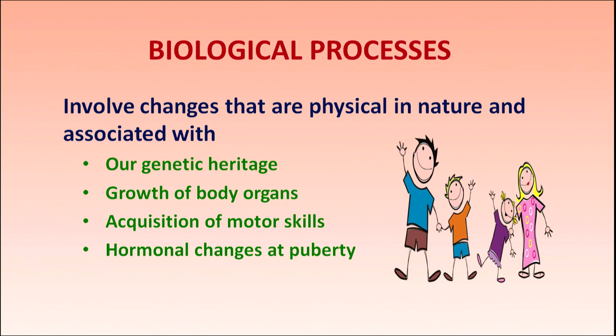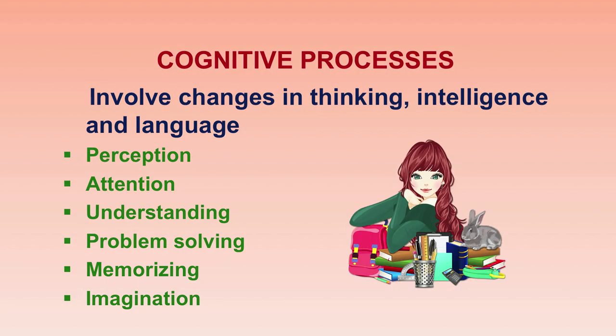The cognitive process is related to thinking, intelligence, and language, and is connected with perception — because everybody has a different perception of the same thing — as well as attention, understanding, problem solving, memorizing, and imagination. Everyone keeps imagining, and everybody has a different imagination.